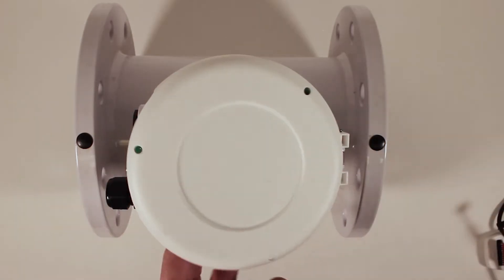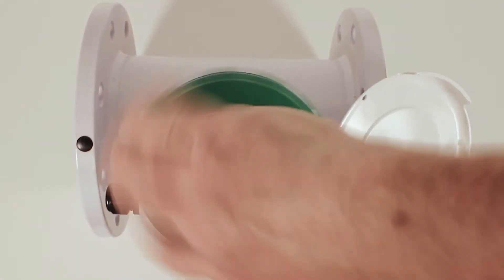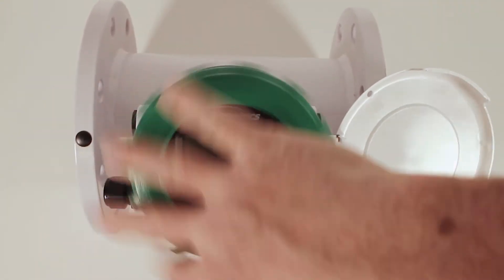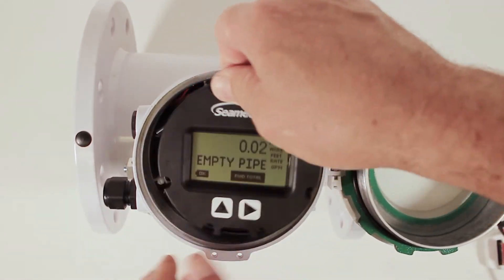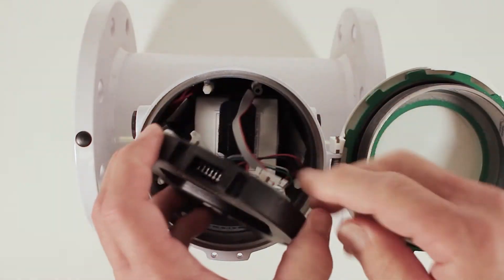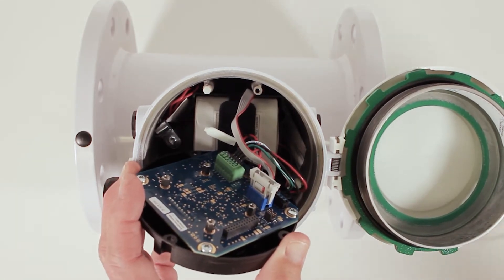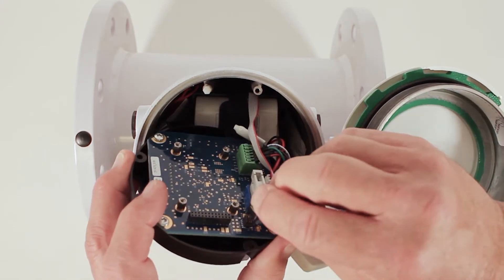So this is the meter that we're going to update. We're going to unscrew the top. Nice long threads here. Unscrew the top and then we will pop the display out. Flip it over. We will plug in our programmer into this little plug right here.